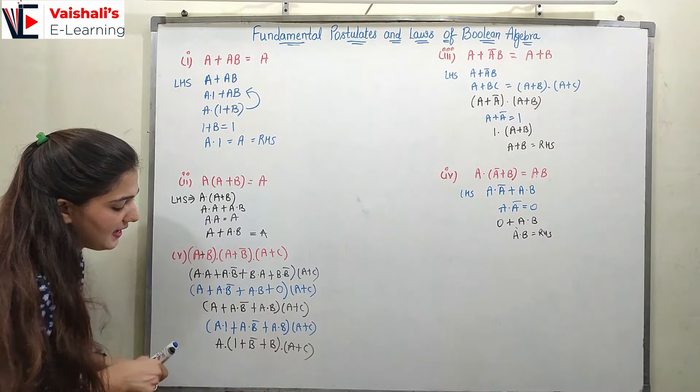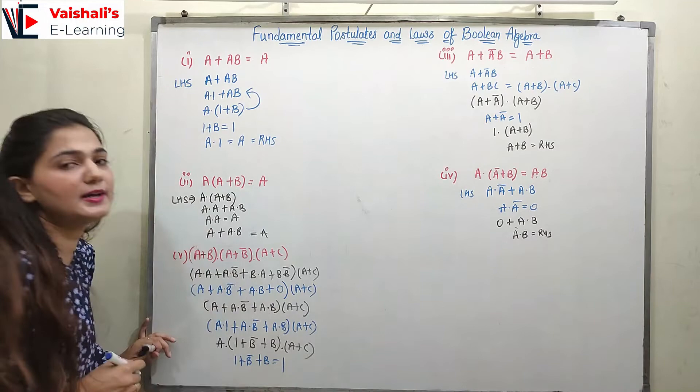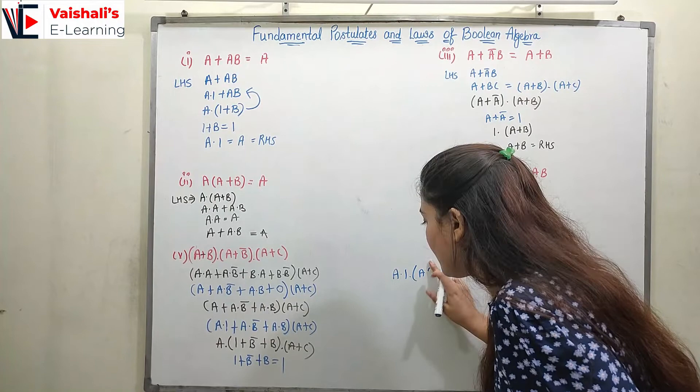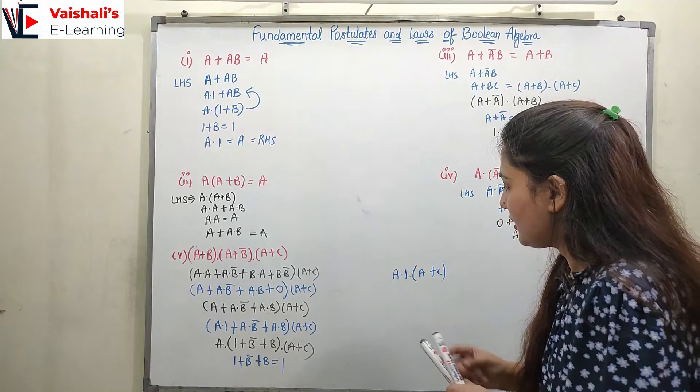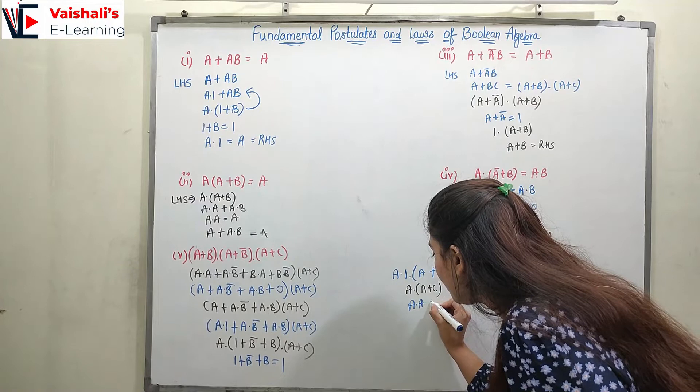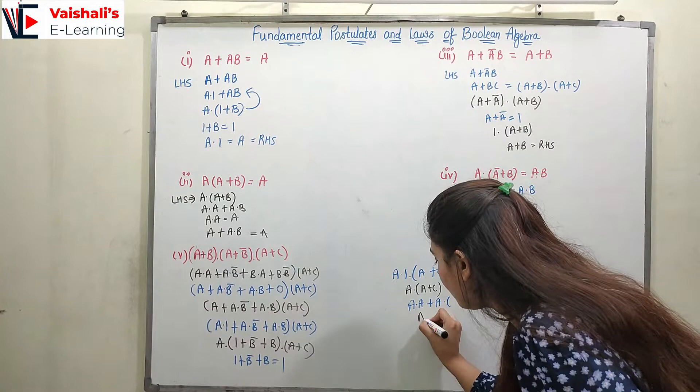So we have a·1·(a + c). Since a·1 = a, we get a·(a + c). We expand again: a·a + a·c = a + a·c. Now a + a·c — we can write a as a·1, giving a·1 + a·c. Taking a common: a·(1 + c). And 1 + c = 1.